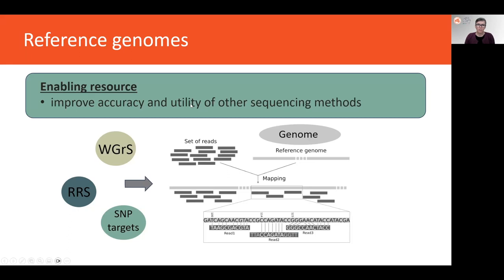Not only do reference genomes provide useful information about threatened species in themselves, but they are also recognised as an enabling resource in conservation genetics. Establishing a reference genome for a species of interest provides a foundation that can improve the accuracy and utility of other sequencing methods. With sequencing costs declining exponentially and initiatives like the Threatened Species Initiative making reference genomes more affordable, we are likely to have reference genomes for many more species in the near future.